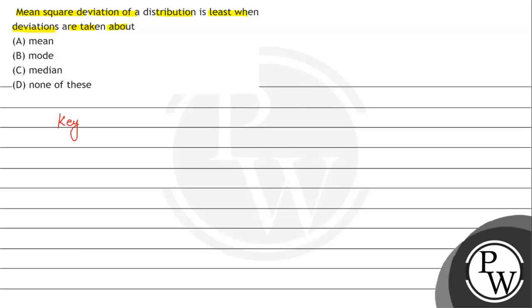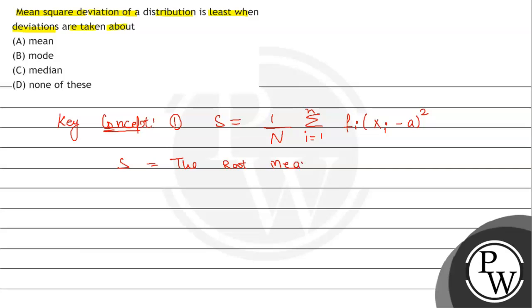First of all, what key concept will we use? The first result is: S equals 1 upon N into summation i goes from 1 to n of fi into (xi minus a) whole square, where S denotes the root mean square deviation from the number a.